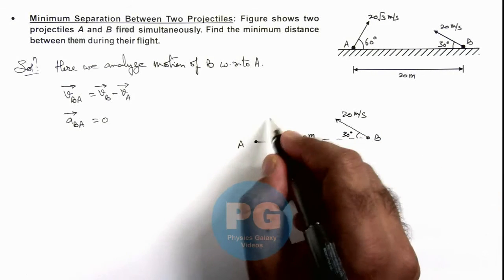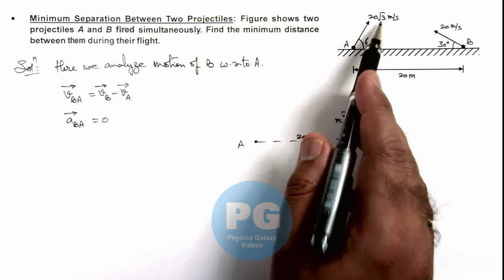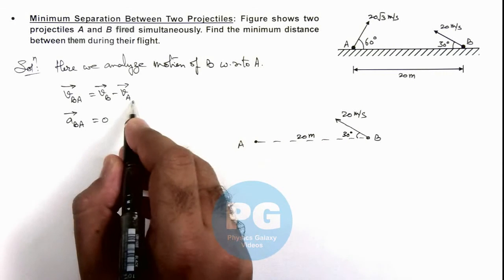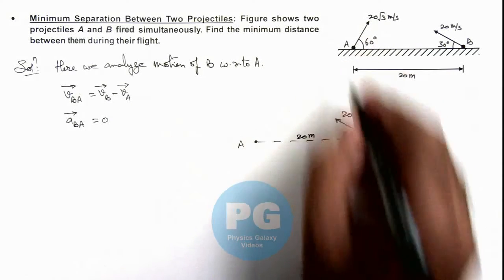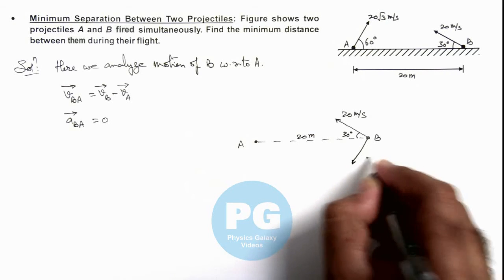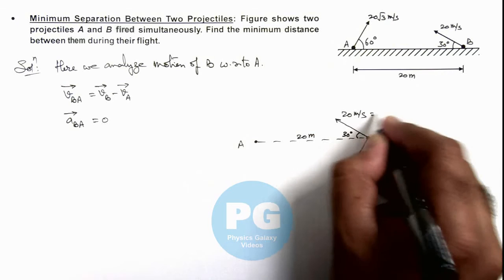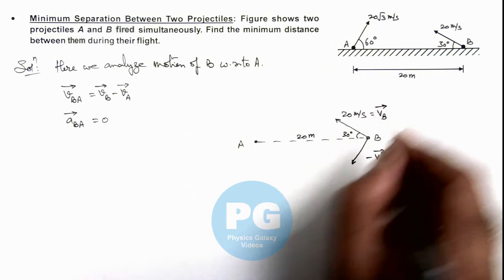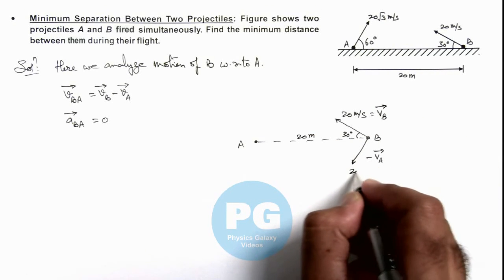As A is thrown with a velocity 20 root 3, then if we add minus v_A in B, the opposite velocity vector at point B, this is minus v_A vector, and this is v_B vector. So the magnitude of this is 20 root 3.